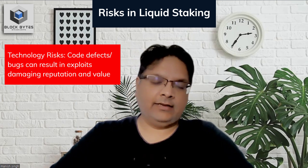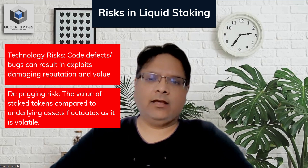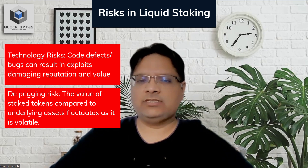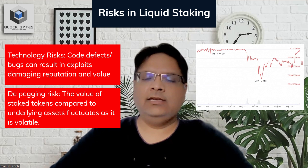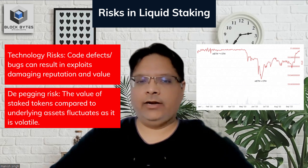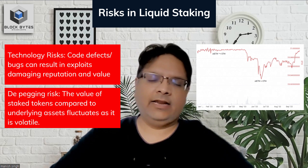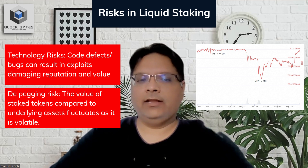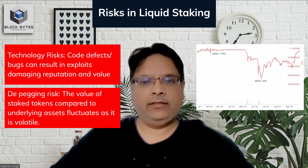Second, de-pegging risk. Staked tokens are not pegged to their underlying asset's value. It is essential to understand that these staked tokens have their own market dynamics, so their value depends on it. For example, in the aftermath of the Terra Luna meltdown, selling pressure was seen on STETH as companies scrambled to generate liquidity to pay off their debts and liabilities, which caused a dip in its value vis-à-vis ETH itself.